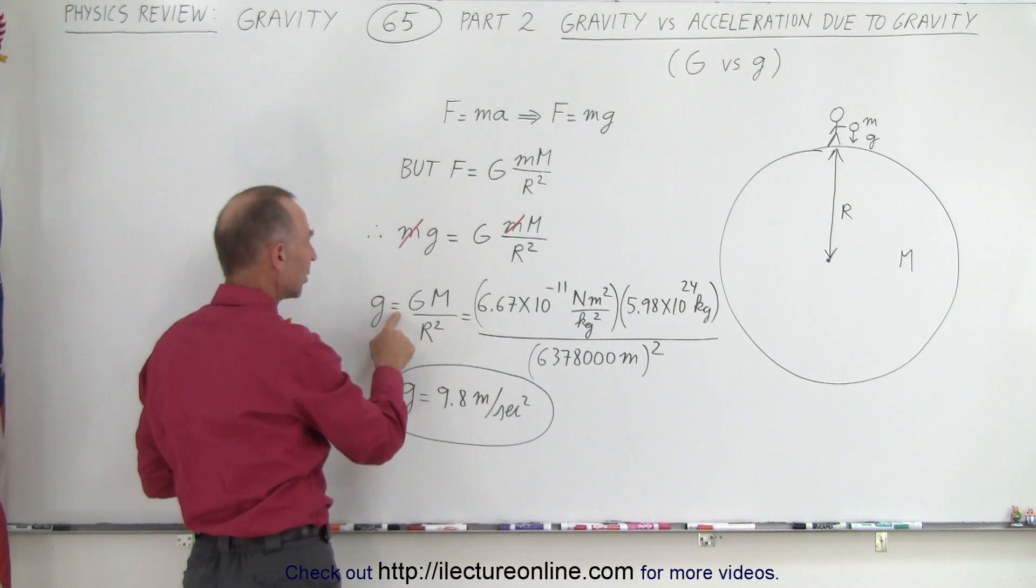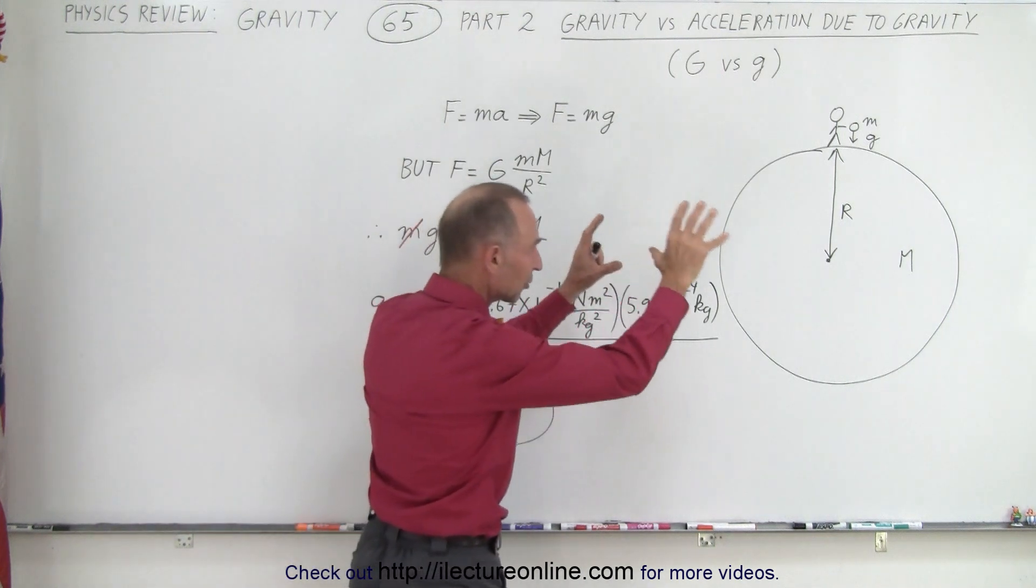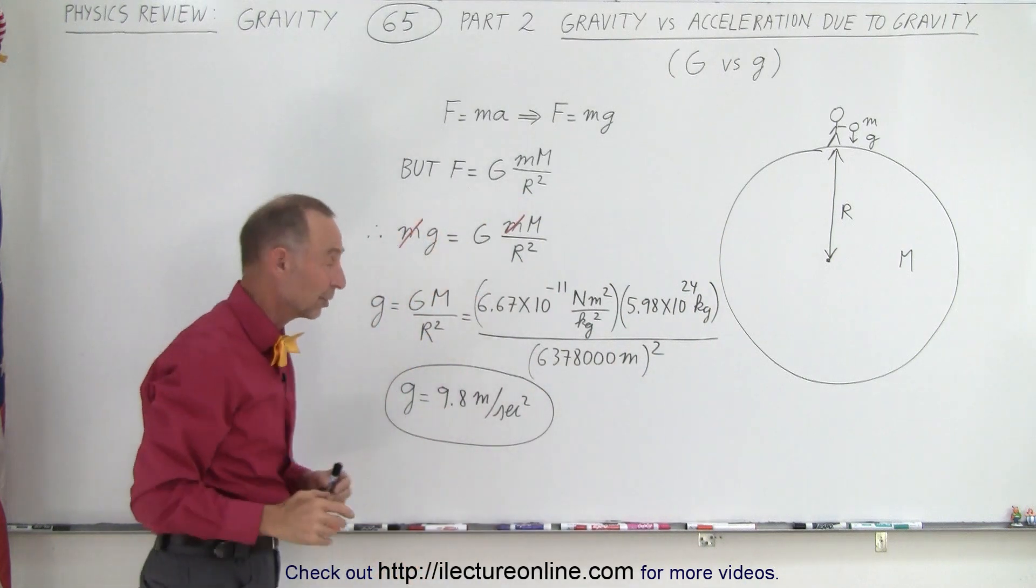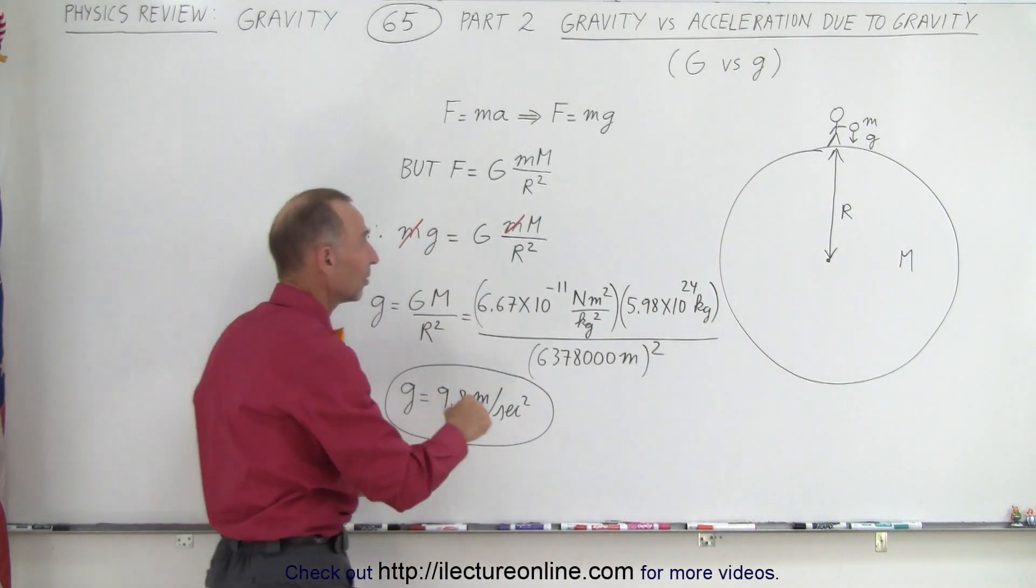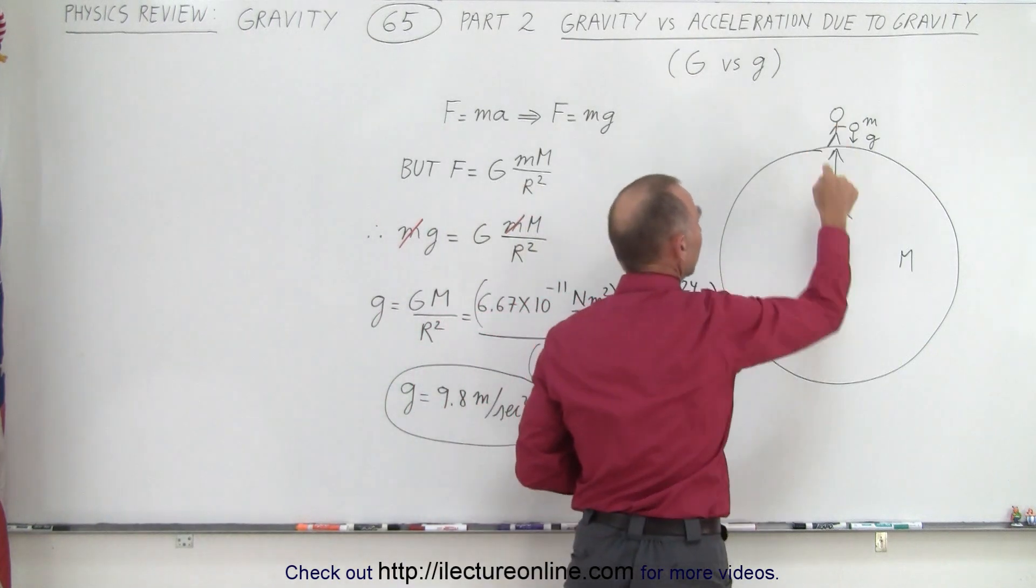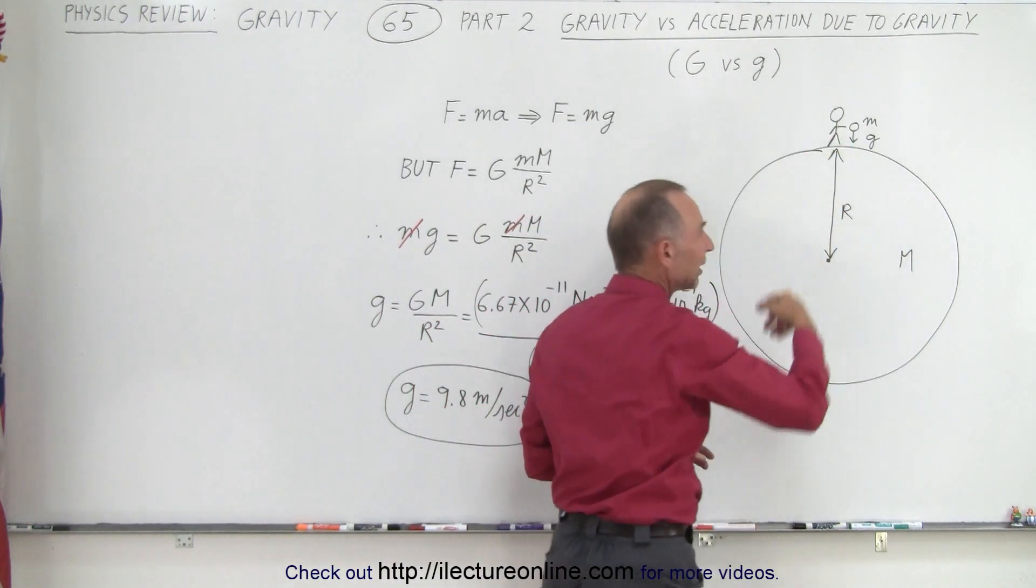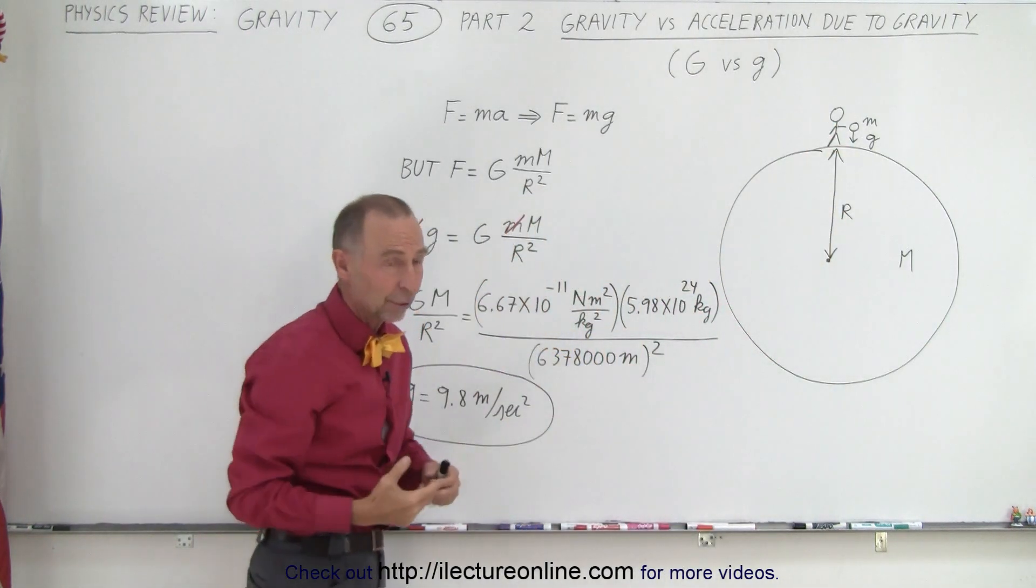The acceleration due to gravity equals the universal gravitational constant times the mass of the object you're on, typically Earth, divided by the distance squared between the center of mass of the object and Earth. This is essentially the radius of Earth unless you're far away from it.